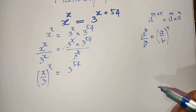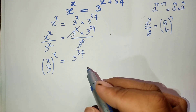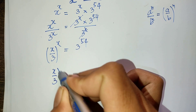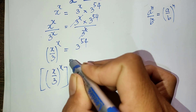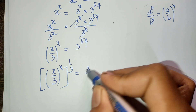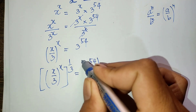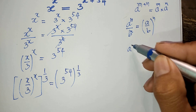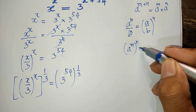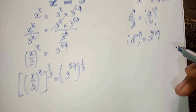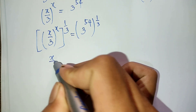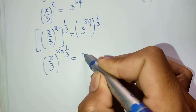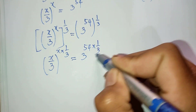Now I raise both sides of this equation to the power 1 divided by 3. So 8 divided by 3, all to the power 8, all to the power 1 divided by 3, equals 3 to the power 54, all to the power 1 divided by 3. Using the rule that a to the power m, all to the power n, equals a to the power m times n.